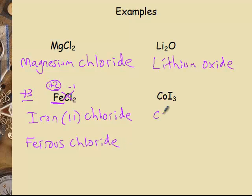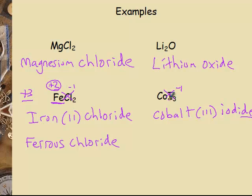Last one — that's cobalt. Cobalt is a transition metal, so it needs a Roman numeral. This would be cobalt three, and then iodide, changing the ending to '-ide.' Why three? Iodine is a minus one, and we have three of them, so that's a total charge of negative three. Therefore, cobalt must be a positive three to balance it out and make it zero, as with all ionic substances.